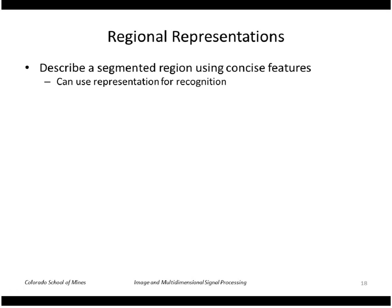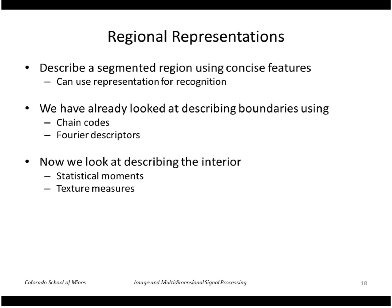Okay, so now let's move on to regional representations. So we've looked at boundary representation. Now we'll look at properties of regions. So we'll use two methods to do that. One is statistical moments and the other is texture measures.